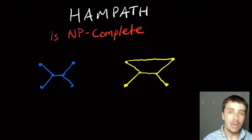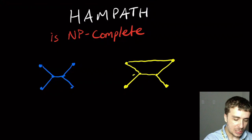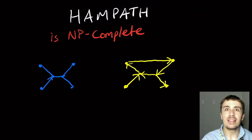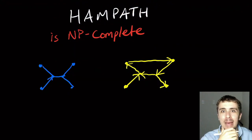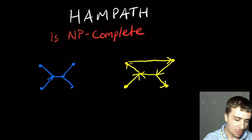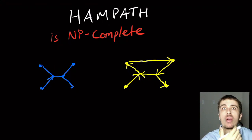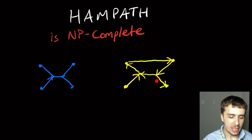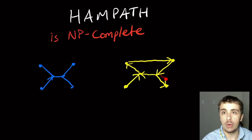Here we're going to talk about the directed Hamiltonian path problem — that means assigning a direction onto each edge. The blue graph won't magically get a Hamiltonian path by assigning directions, but the yellow one could, depending on how the edges are oriented. So there's no Hamiltonian path on the blue one; there still is one on the yellow one because of the direction we put on the edges.